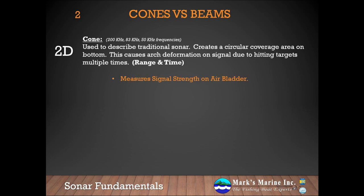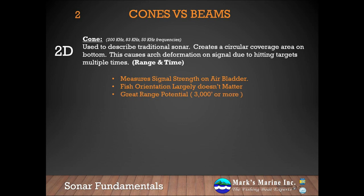The primary thing traditional sonar measures on fish targets is the air bladder. The orientation of the fish generally doesn't matter for the return — if the fish is parallel to the boat, it will return the same arch as if it's perpendicular. It also has great range because of the lower frequency; many transducers can hit 3,000 feet or more.